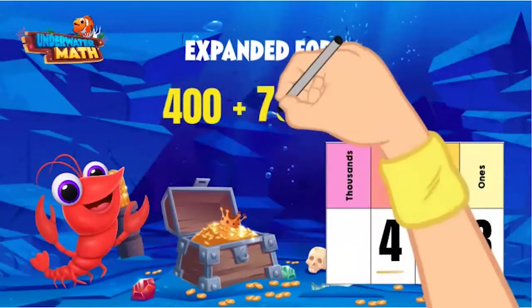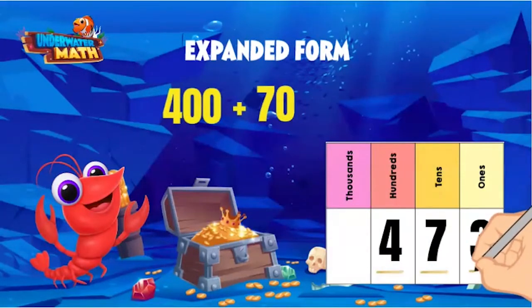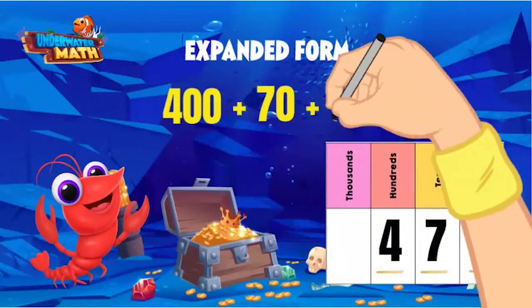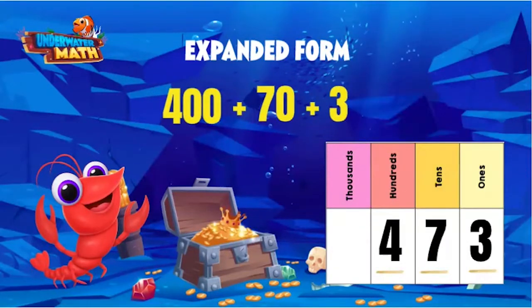Lastly, plus the three in the ones place, representing three ones. 473 in expanded form is 400 + 70 + 3.